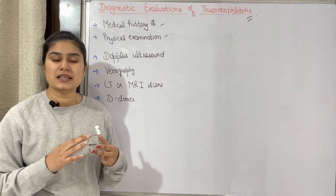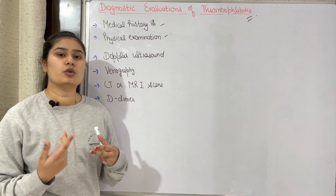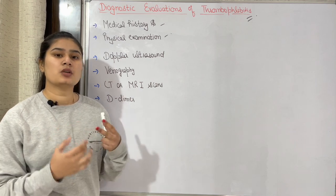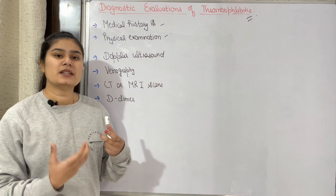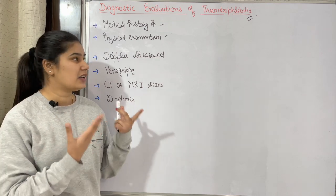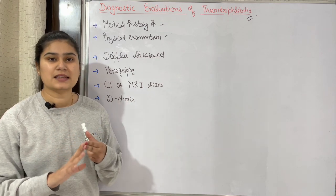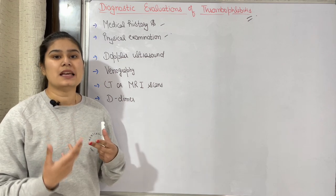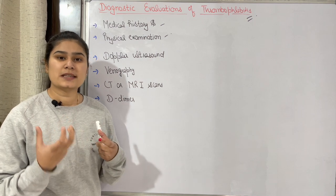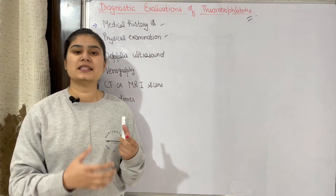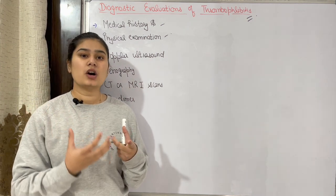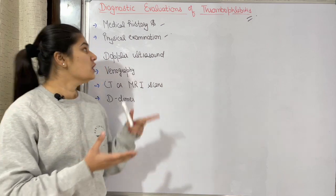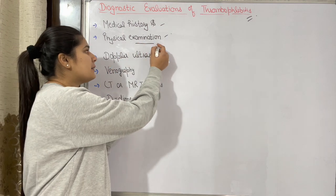Next in history-taking, we will ask about pregnancy, or use of hormonal pills or birth control pills, as these hormones make a person more susceptible to varicose veins or thrombophlebitis. We will also ask about any medicines that increase clotting. Then we will ask the patient about symptoms — in which area is the pain, what are the symptoms, and for how long.